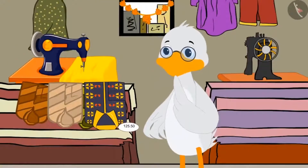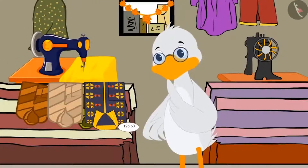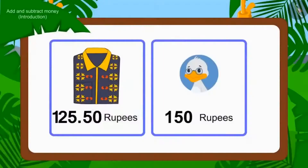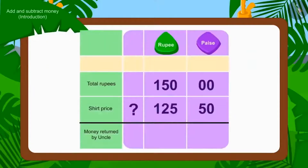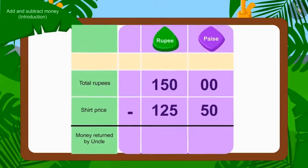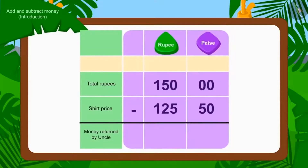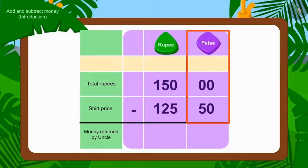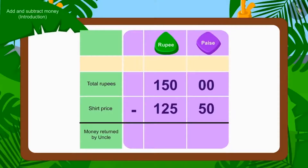Can you tell me how much money Uncle will have to return to them? Children, what operation do we have to use to find this out? Yes — subtraction. We can write it as subtraction in this way. While subtracting, we first subtract the number of paise.